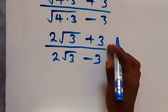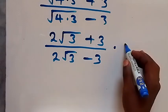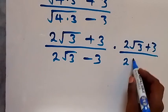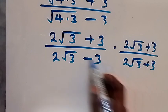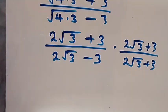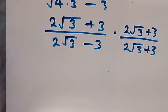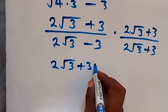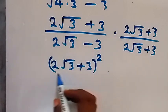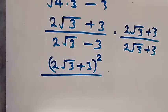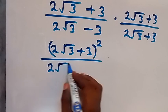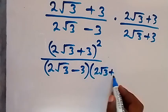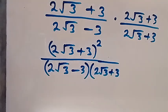Now we can rationalize the denominator and multiply by the conjugate. The conjugate is 2 root 3 plus 3, divided by 2 root 3 plus 3. So we multiply each other — the numerator gives us 2 root 3 plus 3 squared, and in the denominator we bring it together: we have 2 root 3 minus 3 times 2 root 3 plus 3, which are conjugate pairs.